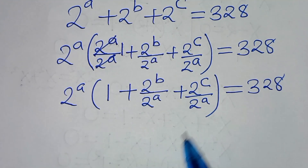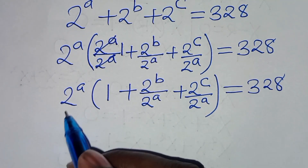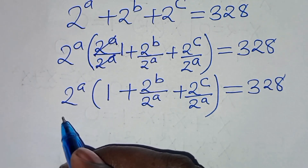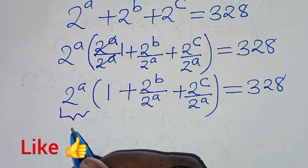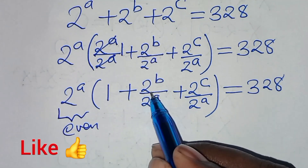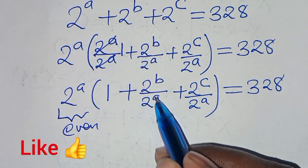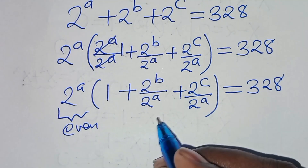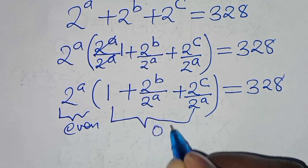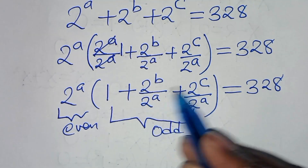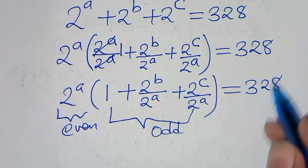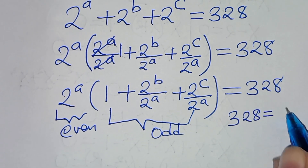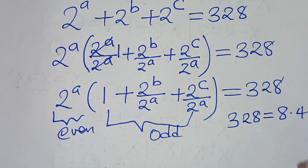Now, comparing the parts: 2^a is an even number, and the parenthetical expression (1 + 2^(b/a) + 2^(c/a)) is an odd number. This equals 328, which we can express as 8 times 41.